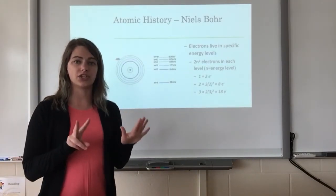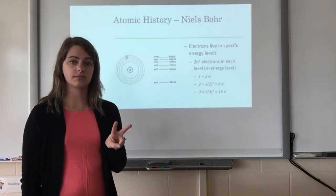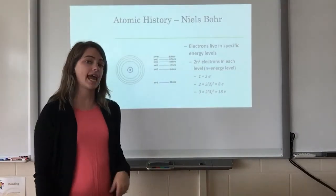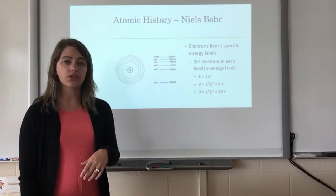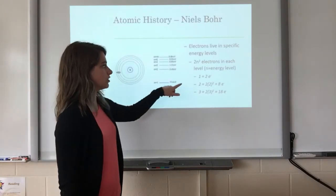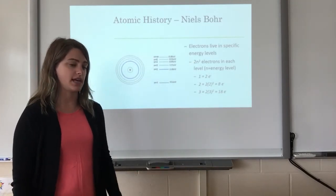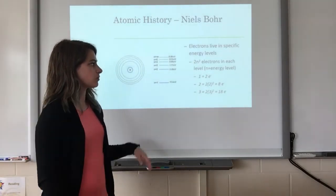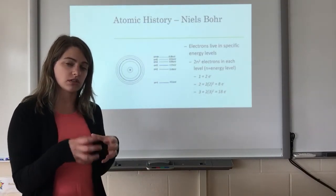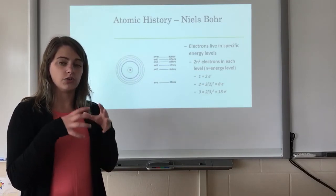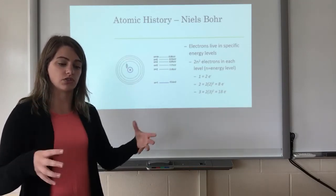There are seven energy levels total. The first energy level can hold a maximum of two electrons. The second energy level can hold eight electrons. The third can hold 18. The fourth can hold 32. You can use the formula 2n² to calculate how many electrons would be held in any energy level up to the seventh. When electrons fill the energy levels, you start at the lowest — the closest to the nucleus, energy level one — fill that until it's full, then go to the next one, and so on.